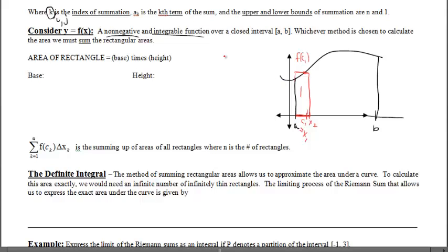We'll do another partition and get another rectangle. For ease of working with this problem, let's make all rectangles have the same width. Remember that delta x — the change in x — equals b minus a over n. So the next rectangle goes from x-sub-2 to x-sub-3.